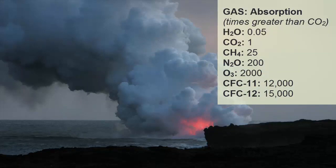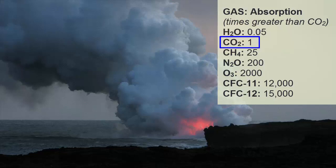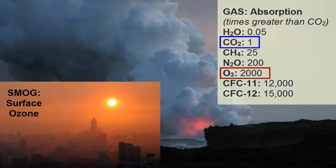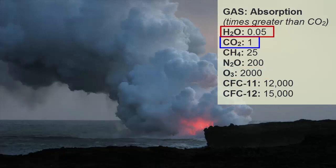This list shows the main greenhouse gases at work in our lower atmosphere in decreasing order of importance. Water is the most important. If we set the IR absorption capability of carbon dioxide at 1 for comparison purposes, we can see that methane is an even more powerful absorber than carbon dioxide — 25 times more powerful. Ozone is 2,000 times more powerful. Water is only 1/20th as powerful as carbon dioxide, yet it is considered the most important greenhouse gas on the planet, followed by carbon dioxide.